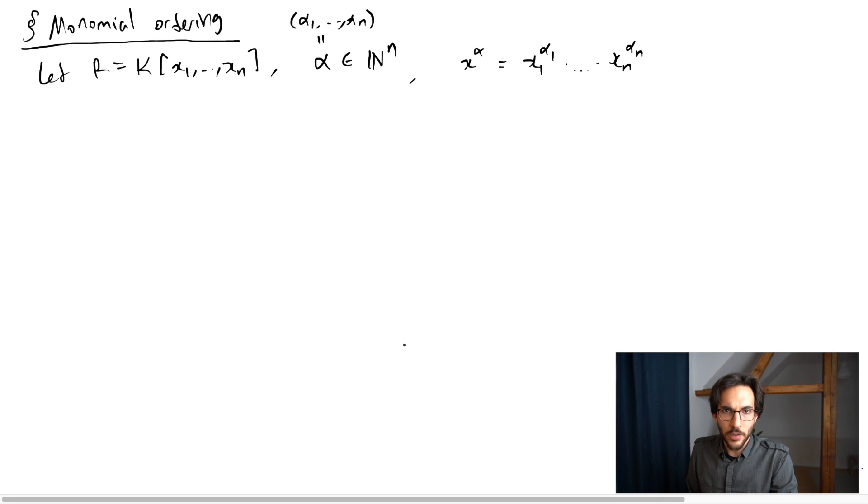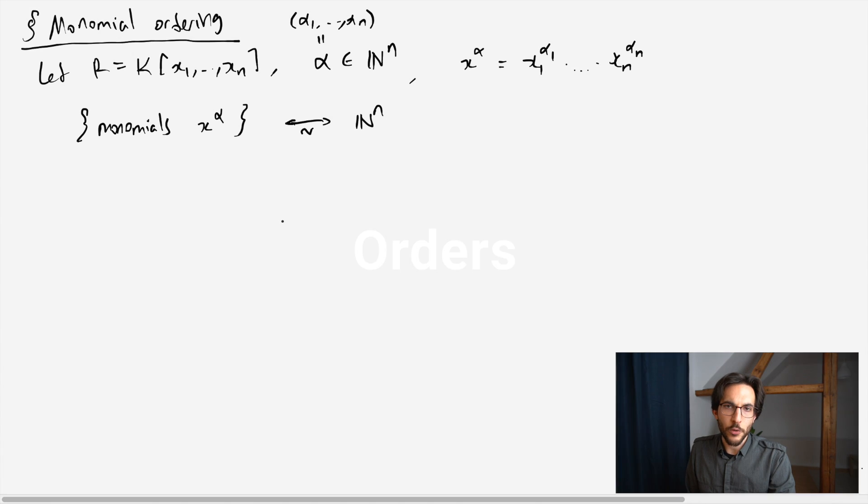So clearly monomials are in bijection with these n tuples of natural numbers alpha, where from alpha we go to x to the alpha, and from x to the alpha we read the exponents. So in order to compare monomials, we just have to compare tuples of natural numbers.